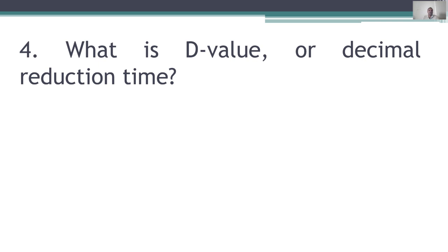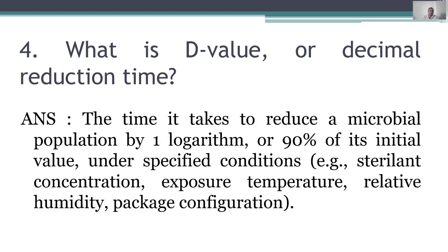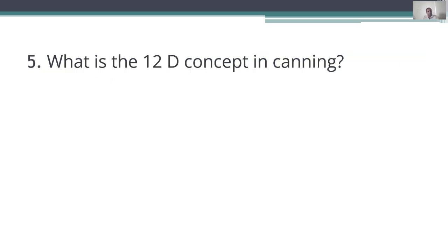Next question: what is D value, or decimal reduction time? D value is the time it takes to reduce a microbial population by one logarithm, or 90% of its initial value, under specified conditions such as sterilizing concentration, exposure temperature, relative humidity, and package configuration.